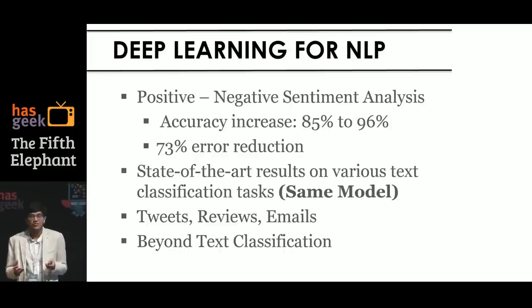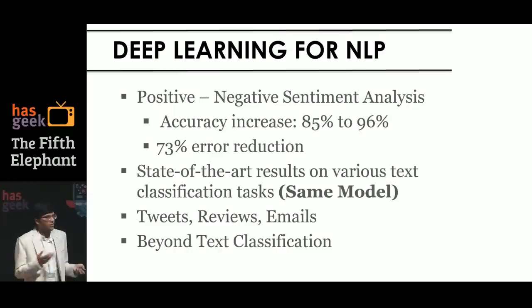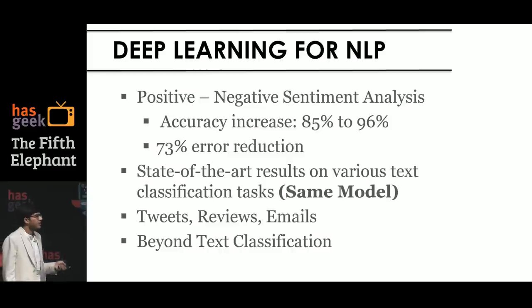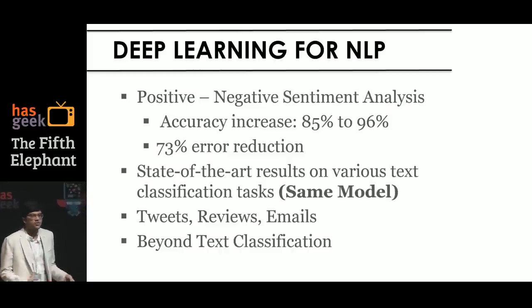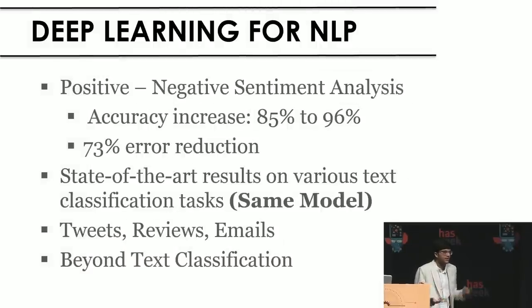The most amazing thing was that there was no sentiment-specific feature. I did not handle negation specifically. I did not give it a sentiment-specific lexicon or anything like that, and still it learned all of that. I applied it to many other tasks — topic identification — and on various datasets like tweets, reviews, and emails. It worked very well in all these cases. Most of my talk will be about text classification, but in the end I'll give some hints on how to solve other problems using neural networks. Many problems can actually be reduced to text classification.